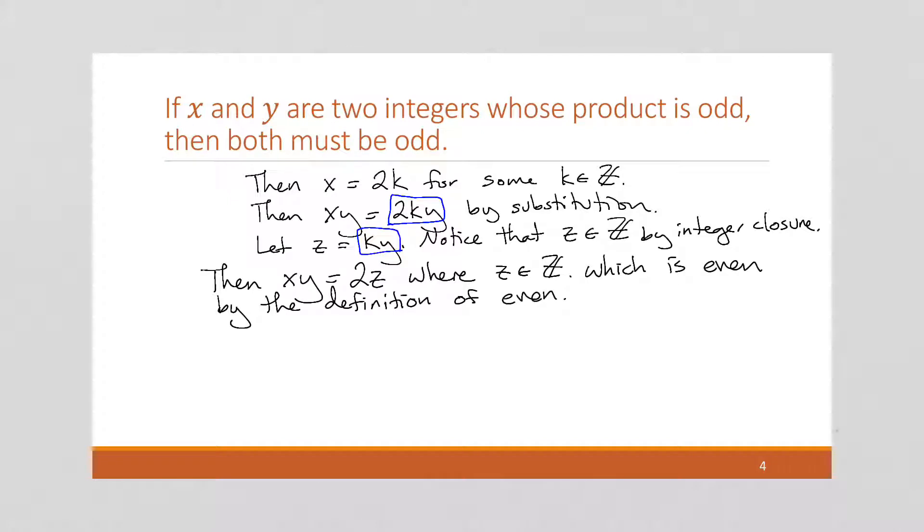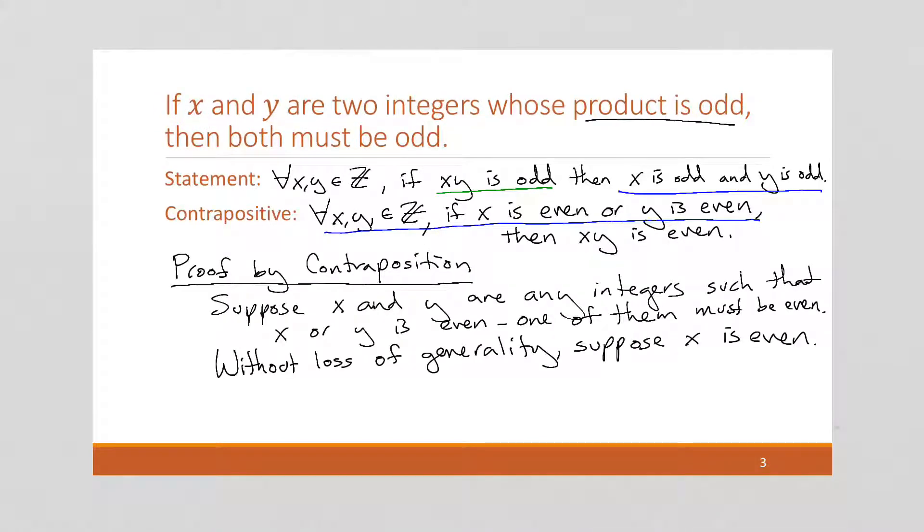And that is what we were trying to show. If we go back a slide, right? Oh, we forgot to write it. I forgot to say that. Let's complete the proof. We want to show that xy is even. That's our goal.